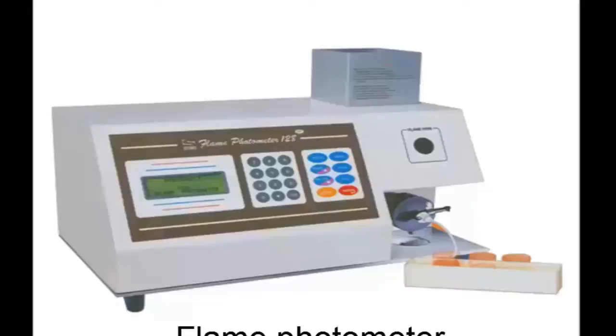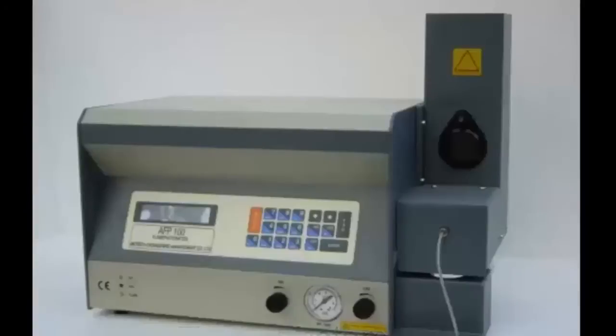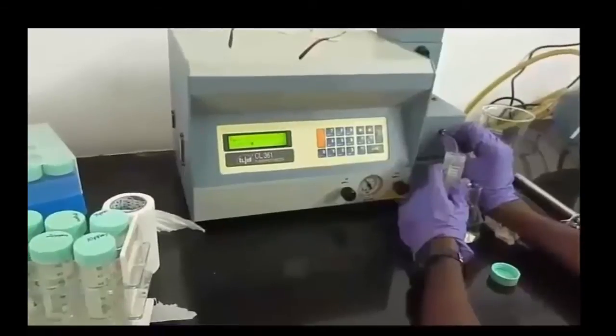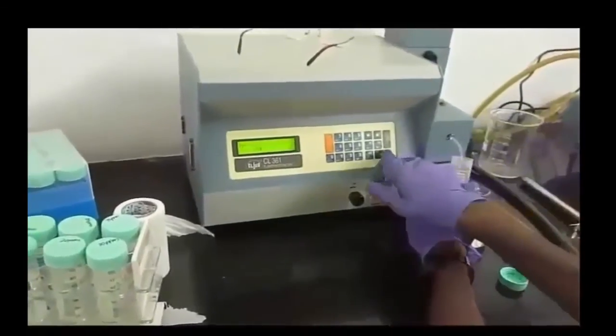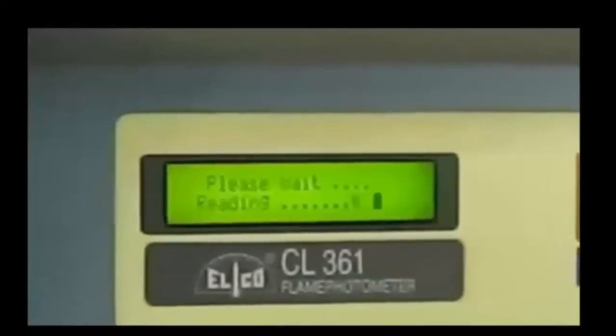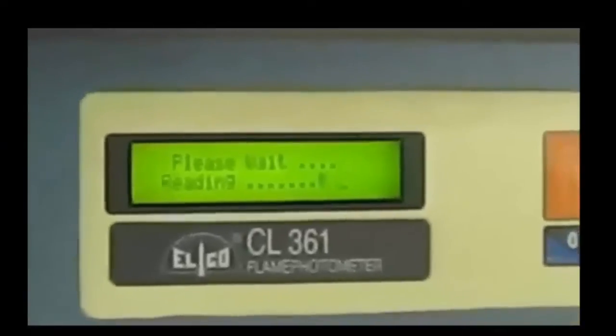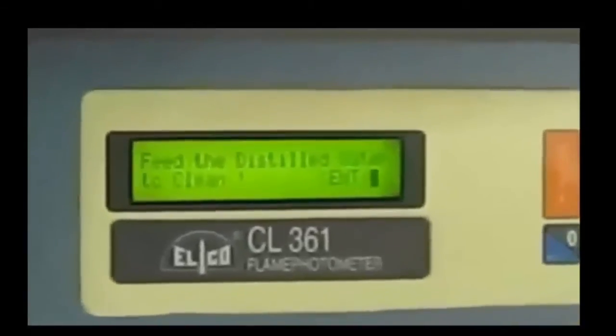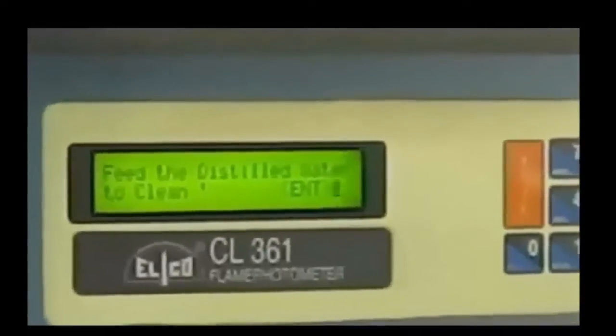Flame photometer: It is a device used to determine the concentration of certain metal ions like sodium, potassium, lithium, and calcium. In principle, it is a controlled flame test with the intensity of the flame color quantified by photoelectric circuitry. The intensity of the color depends on the energy absorbed by the atoms.